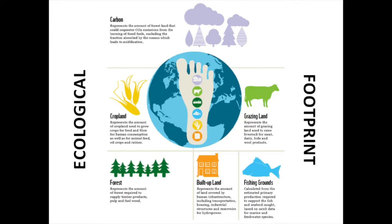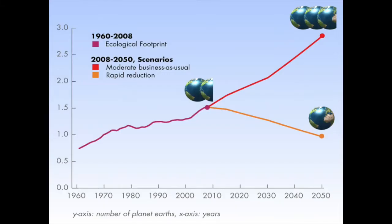Ecological footprint analysis indicator data consists of the combined area of biologically productive land and fishing grounds available on either a global or country scale versus those currently used by the corresponding human population. This includes cropland, grazing land, forest, built-up land, fresh and saltwater fisheries as well as carbon emissions and sequestration.